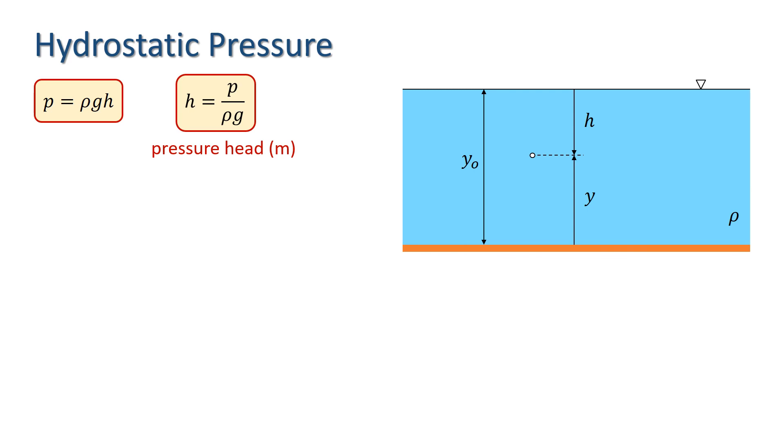The expression for hydrostatic pressure can be rewritten as p over rho G plus y equals y nought, which is constant for a fluid at rest. This shows that any increase in elevation is compensated by a corresponding decrease in pressure head. Such a distribution of pressure is known as a hydrostatic pressure distribution.